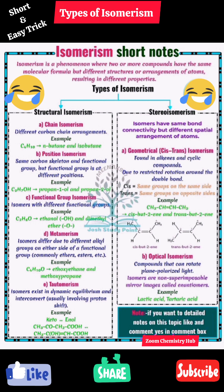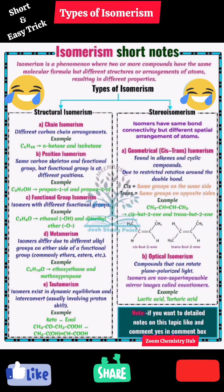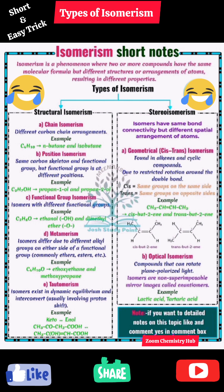Next is tautomerism, where isomers exist in dynamic equilibrium and interconvert, usually involving proton shifting. Examples are the keto and enol forms.